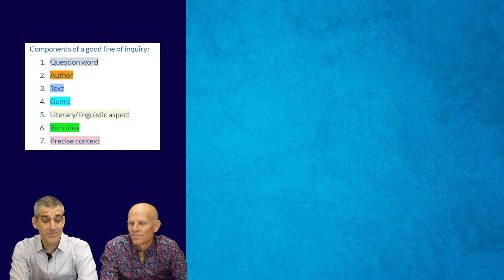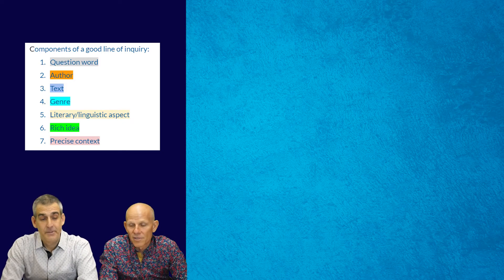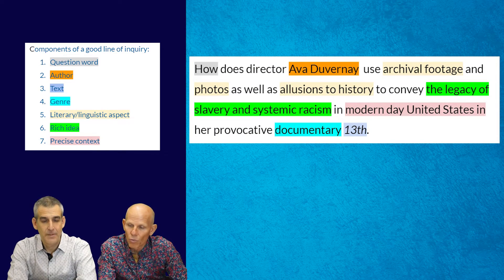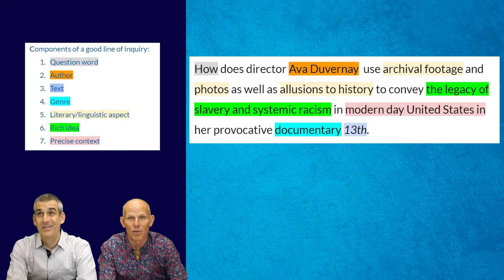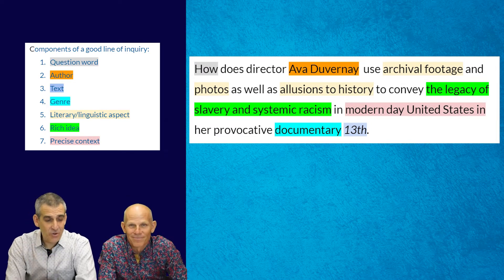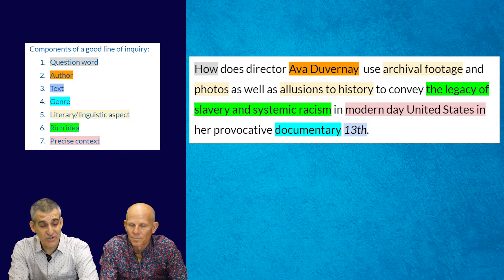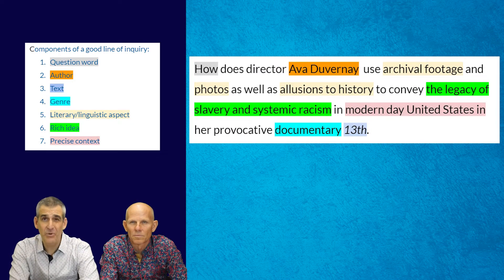Just a quick reminder: the higher level essay is twelve to fifteen hundred words and we think you should be closer to fifteen hundred. The components of a good line of inquiry are: a question word, the author, the text, genre, a literary/linguistic aspect, rich ideas, and a precise context. Here's a sample line of inquiry for Lang and Lit using a documentary: 'How does director Ava DuVernay use archival footage and photos as well as allusions to history to convey the legacy of slavery and systemic racism in modern-day United States in her provocative documentary 13th?' It's long but grammatically correct, and we can see all the required components.